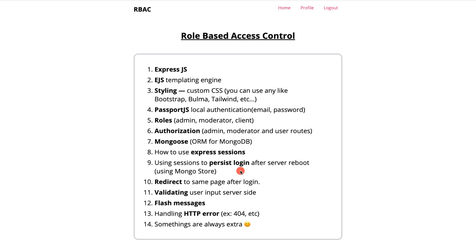This tutorial series is divided into separate parts. First, if you only want to learn Passport.js local authentication using email and password, that is the first step in building RBAC. Second, we'll implement input validation using express-validator. Third and finally, we'll implement the full role-based access control — assigning and enforcing roles for all users in the application.